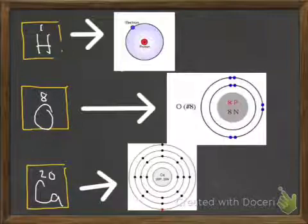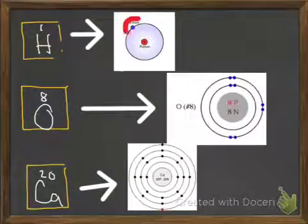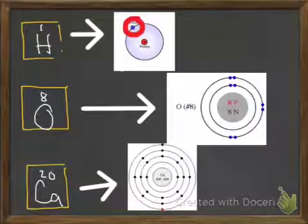Now the definition of valence electron is the electrons on the outermost shell. So with hydrogen, we're simply talking about that one valence electron. So hydrogen has one valence electron.